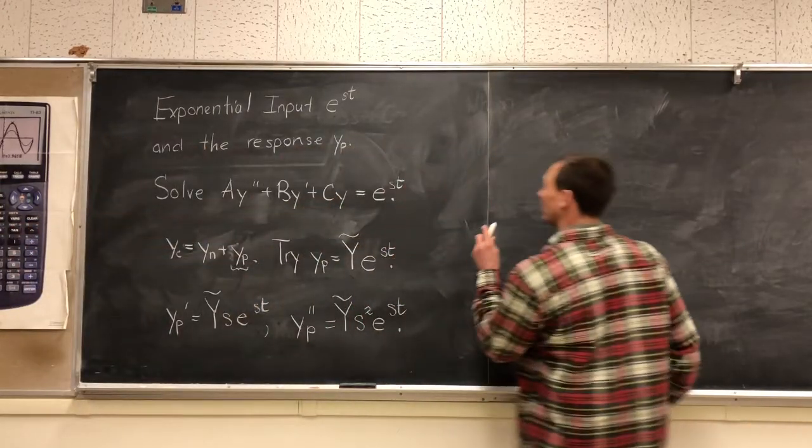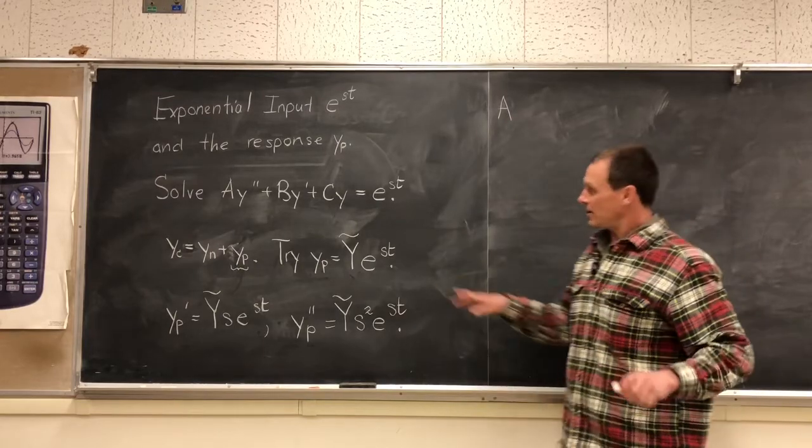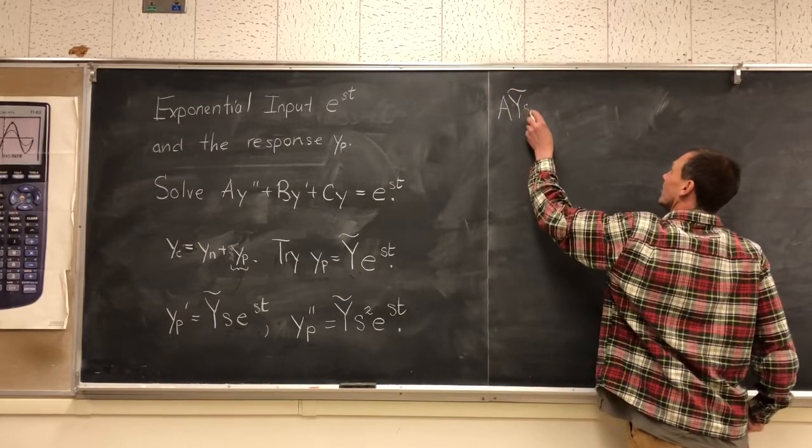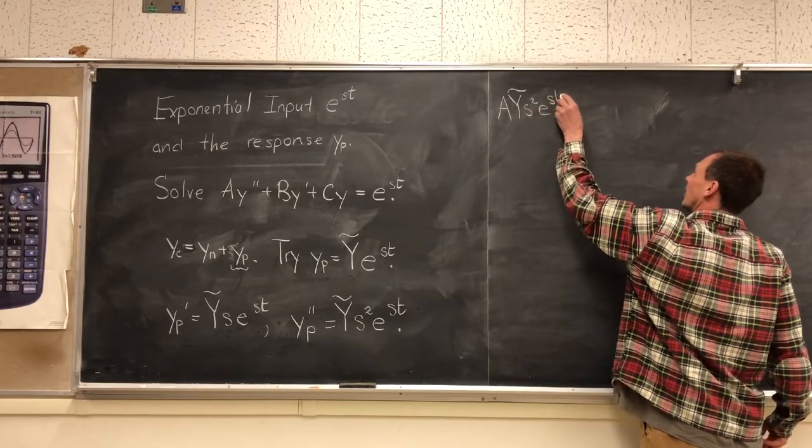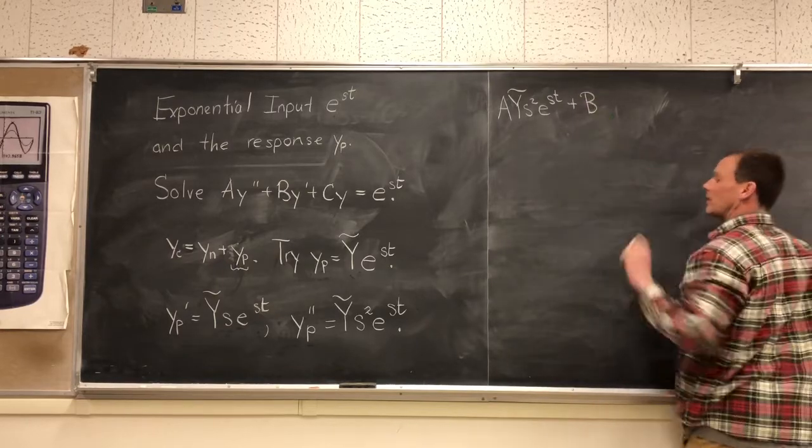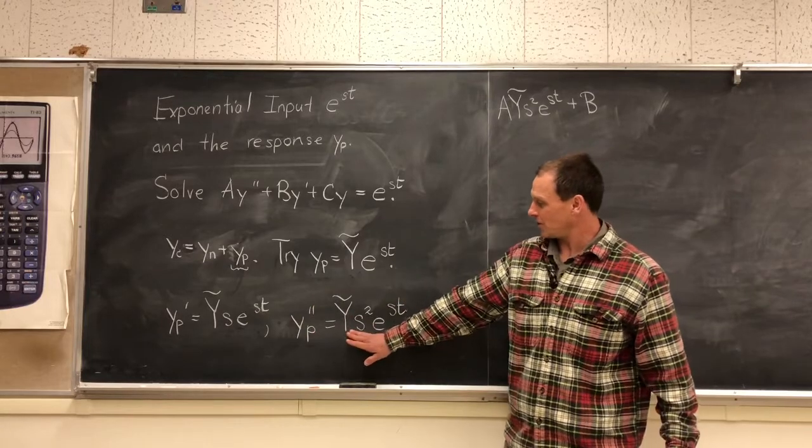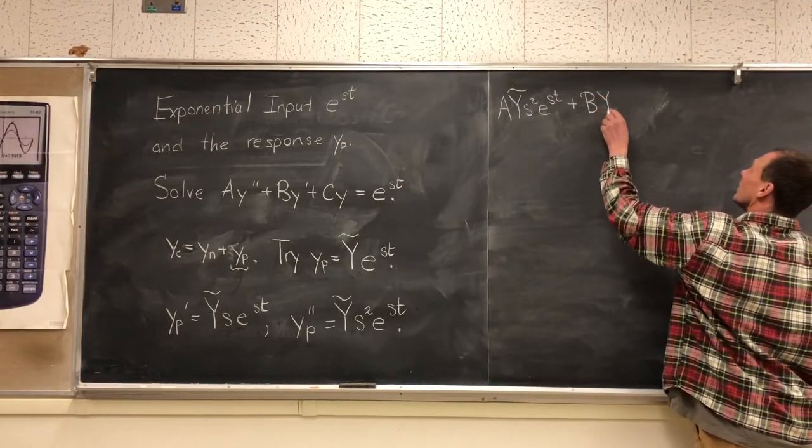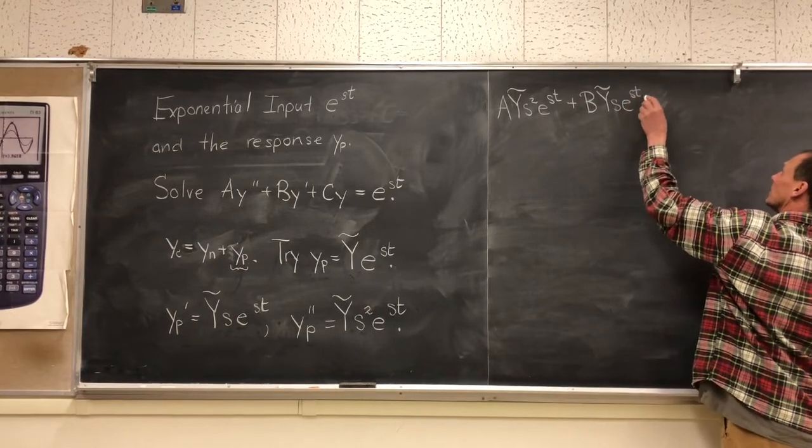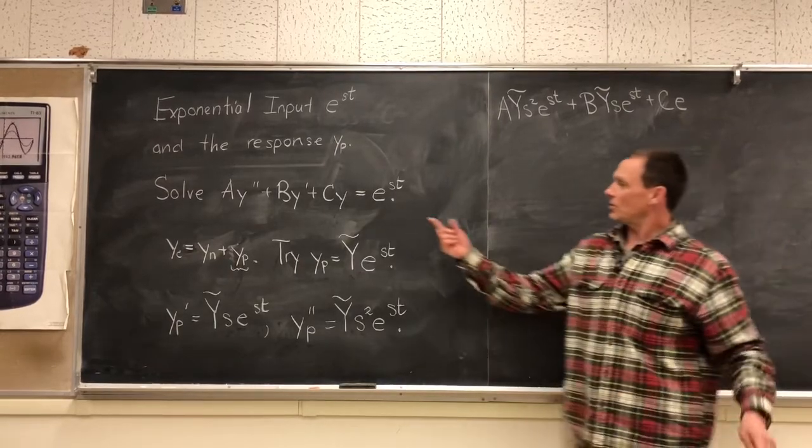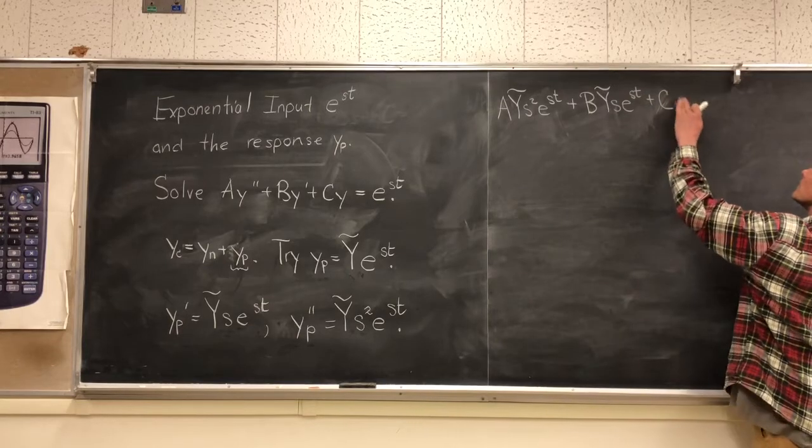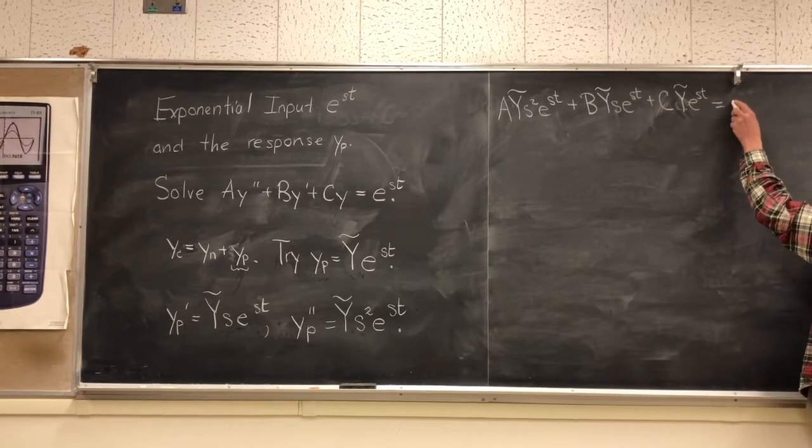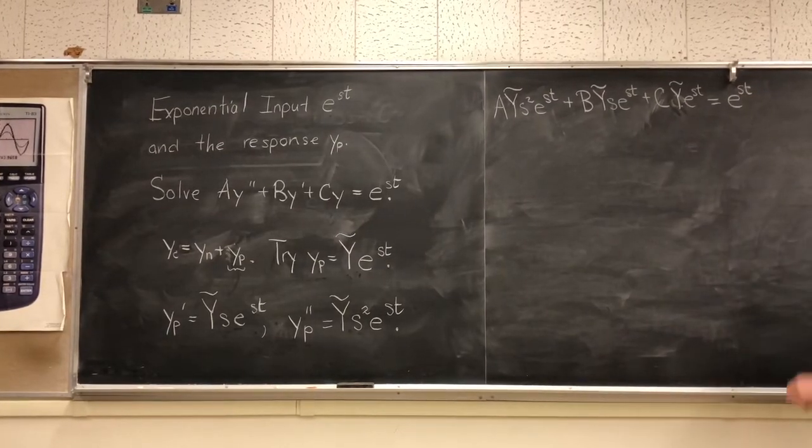So here we go. I'm going to come over here. Now I have a times the second derivative, so I write this as capital Y tilde s squared e to the st, plus b—now I'm substituting in my first derivative—that's b times Y tilde times s times e to the st, plus c times our original y particular, so that's Y tilde e to the st, equals e to the st.